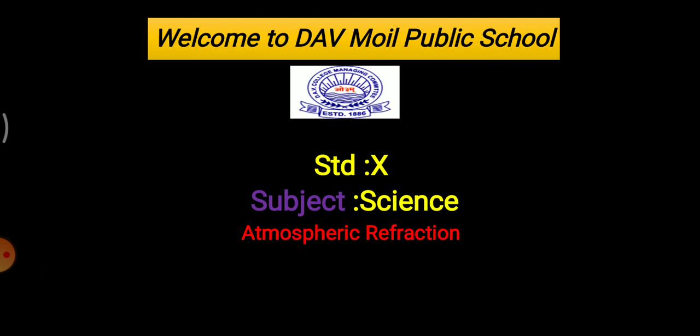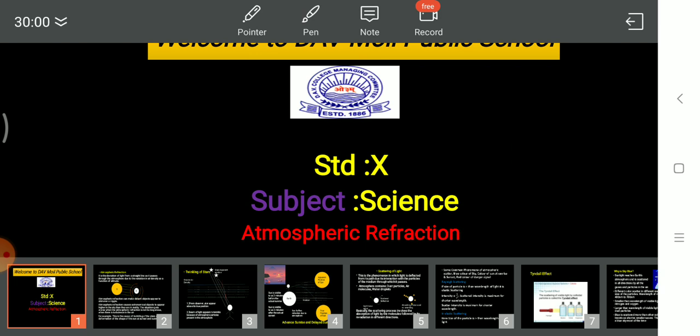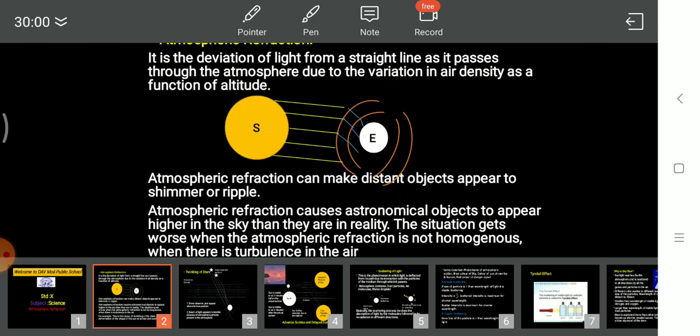Based on the similar concept, we will study about atmospheric refraction. As you know, our earth's atmosphere comprises of different layers. Refraction which occurs with the presence of different layers of atmosphere is known as atmospheric refraction.